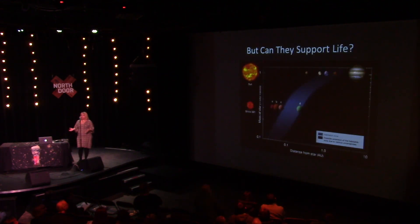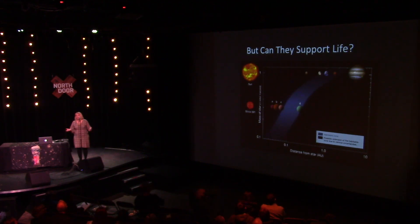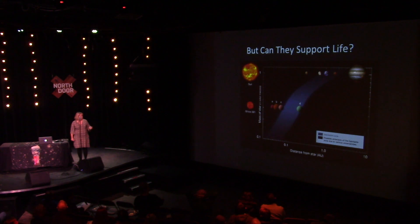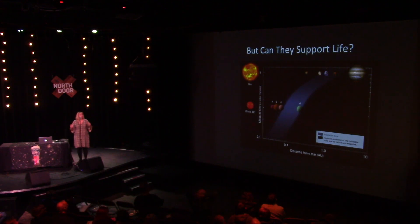Then the next question becomes: can they support life? We know around our own solar system one case where life has formed, and some other tentative evidence — like liquid water on Mars — that may suggest that life formed at one point. But the way these planetary systems are going to look, and the places you're going to be looking for life, are going to be very different around these small stars.